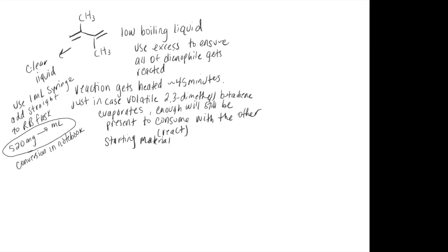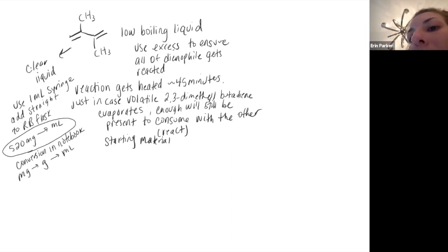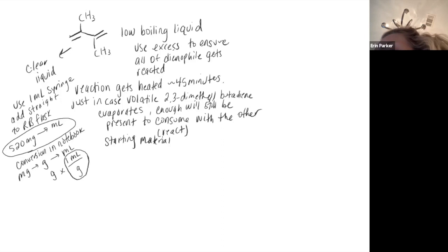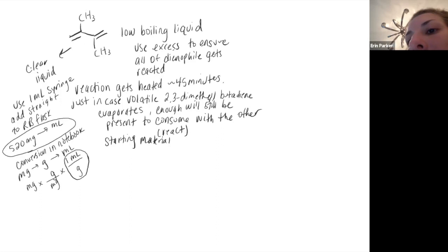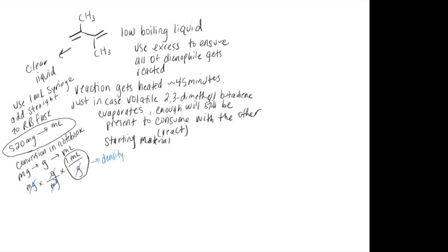How do we convert milligrams to milliliters? We convert mass to volume by first converting milligrams to grams, and then using the relationship between mass and volume for a liquid. You'd have grams divided by grams per milliliter — that's density. What I've just shown here is dimensional analysis: using our units to guide us through to get our desired unit.